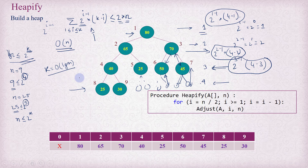So the heapify operation takes linear time. That means if you have n elements in your array, building the heap from that array in place takes O(n) time in the worst case. In the next tutorial, we are going to understand heap sort. We have now learned everything about the heap: how to insert an element, how to build a heap using heapify, how to delete an element, and how to adjust the heap. So we are all set to learn the heap sort algorithm. Thank you for watching.